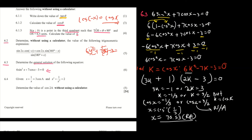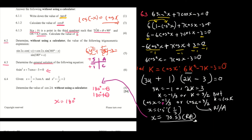Now look at the impact of the negative. Go back to your CAST diagram and ask: where is cos negative? Cos is negative in the second quadrant and in the third quadrant. In the second quadrant you have 180° minus θ; in the third quadrant you have 180° plus θ. Use these to find your values of x.